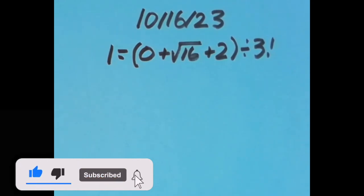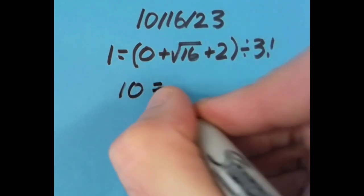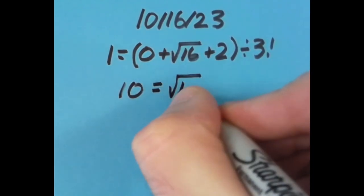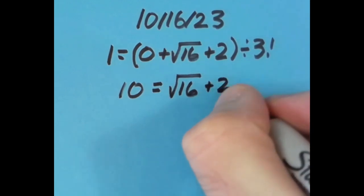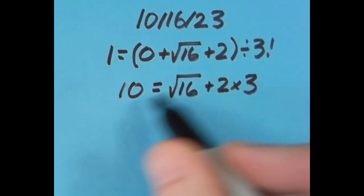I did try it some other ways with the equal sign in different spots. Here I said, let's have 10 equals the square root of 16, which is 4, and I'm going to add that to 2 times 3. Multiplication before the addition, 2 times 3 is 6, so 4 plus 6 is 10.